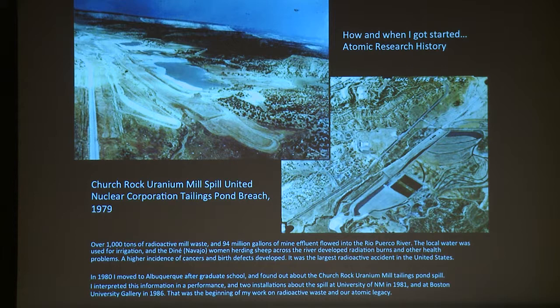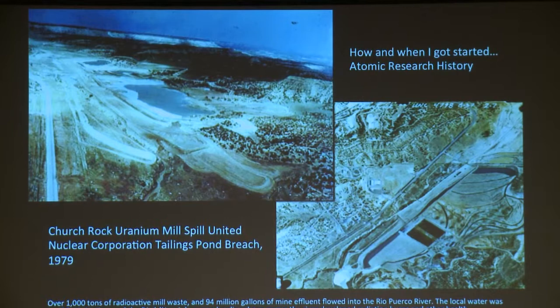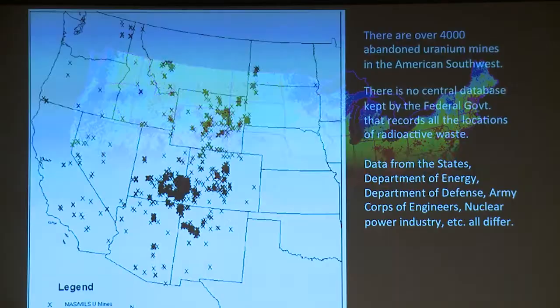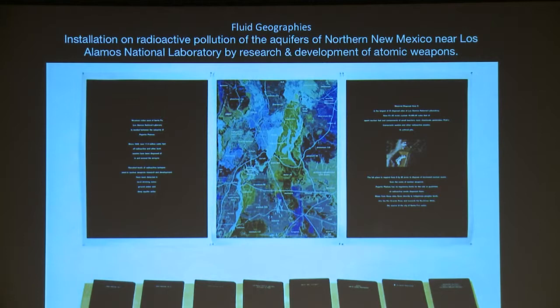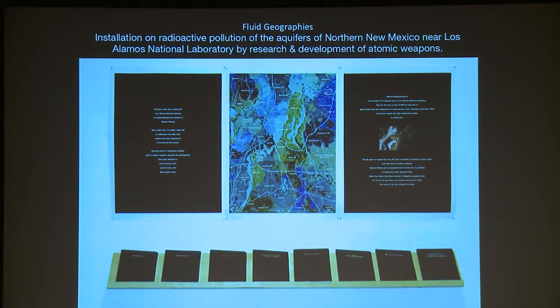Back in 1980 I got very interested in atomic legacy sites. I was living in Albuquerque right out of graduate school and read in the newspaper about the Church Rock uranium mill spill that happened three months after Three Mile Island. This spill happened on the Navajo Reservation and nobody heard about it. It went on for months — millions of gallons pouring into the Rio Puerco River. Women herding their sheep across the river started getting sores on their legs that wouldn't heal. Then you started seeing birth defects, and then cancer clusters in these specific populations.